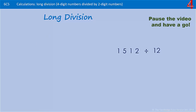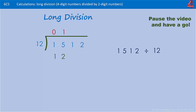Here's one for you to try: 1512 divided by 12. Pause the video and have a go. 1512 divided by 12 — how many times does 12 go into 1? It doesn't, so we're going to put a zero there. How many times does 12 go into 15? It'll go in once. One times 12 is 12 — take it away from the 15 and that leaves you with three. Bring down the next digit.